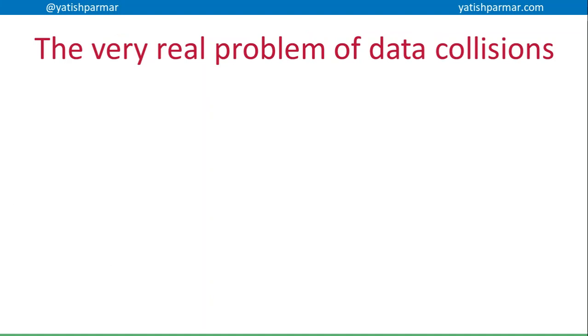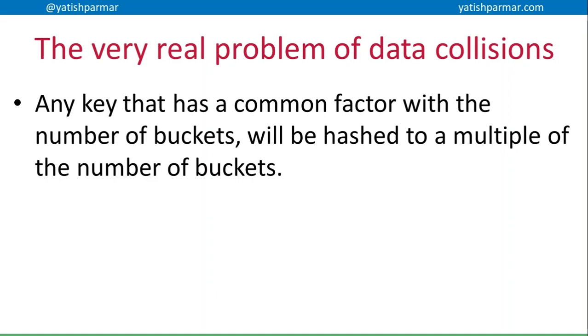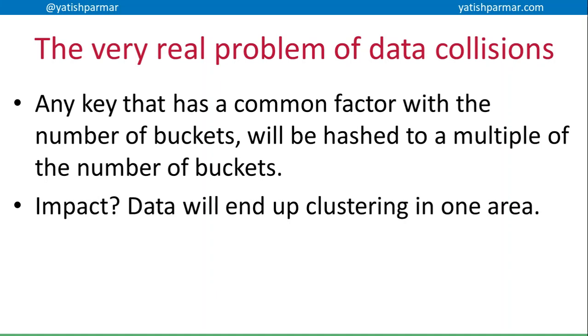So this is a very real problem. Basically you can see that anywhere where we had a common factor with the number of buckets, then the hash that's generated is going to be a multiple of that number of buckets. So instead of getting that uniform spread, the data is going to end up clustering in one area.